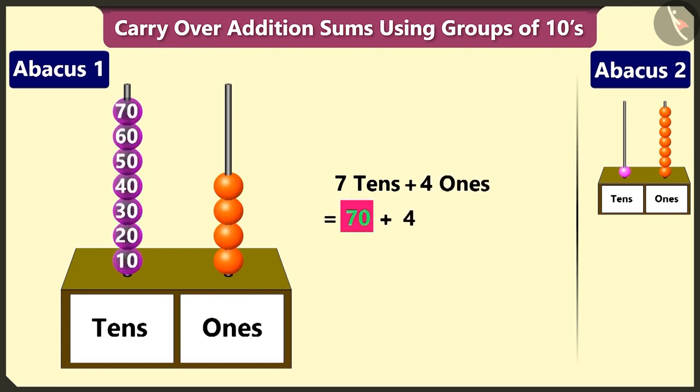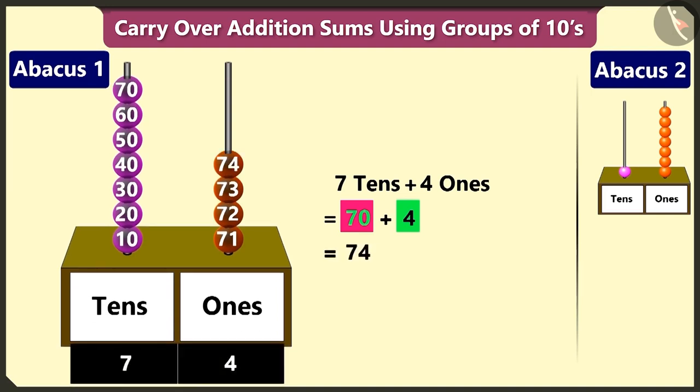Now to add four to seventy, count after seventy. Seventy-one, seventy-two, seventy-three and seventy-four.